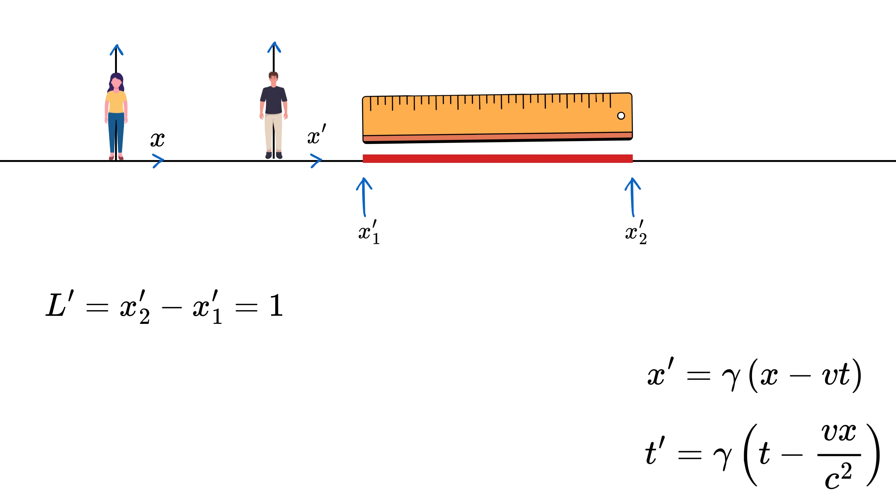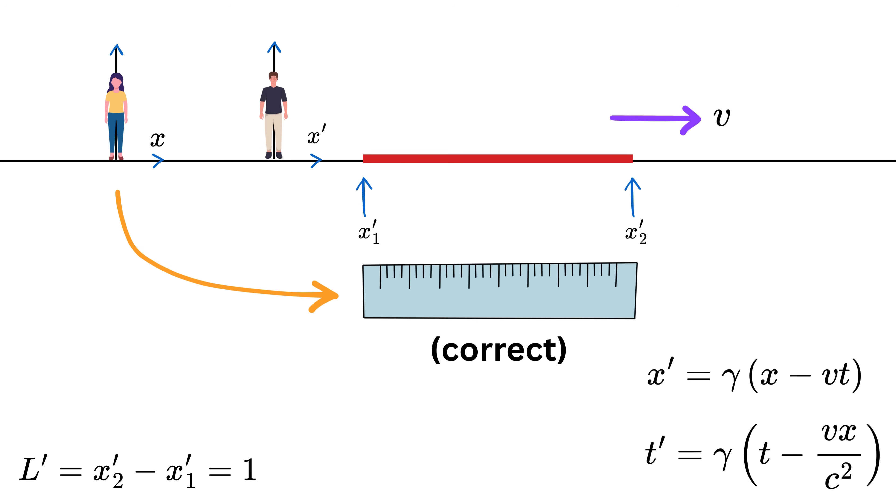So Bob says my pole is x two prime minus x one prime, or one meter, right? Now before we proceed further, note that to measure the length of a moving object in your own frame, like Alice measuring Bob's moving pole, you have to look at both ends of the object at the exact same time in your frame.